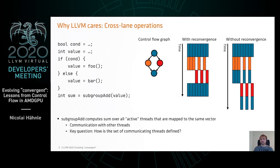The subgroup add takes the incoming value from all threads that are active at the time, sums them up, and returns the result to all participating threads. So clearly it makes a difference whether we have reconvergence or not. Remember that all the vector business is not visible in the IR — there are no vectors, no lockstep execution. It's a single-threaded perspective IR, but there is communication with other threads. The key question is: which threads are communicating?